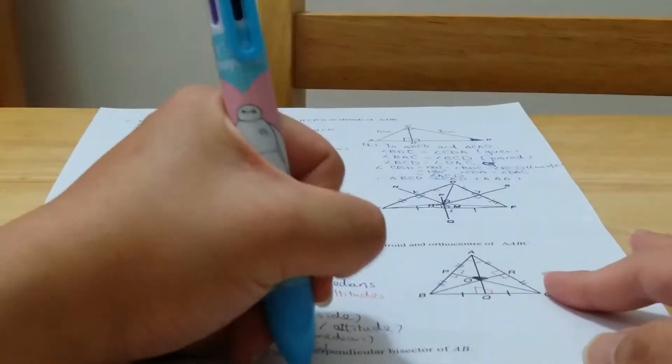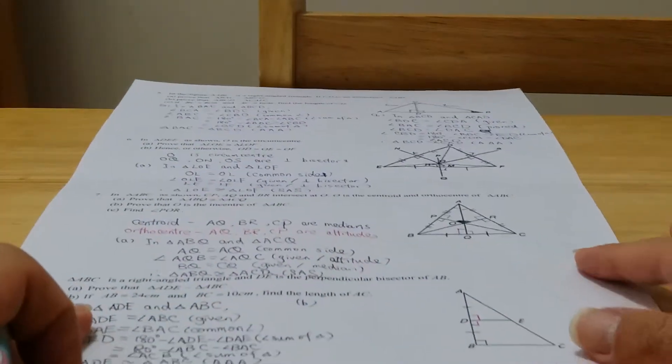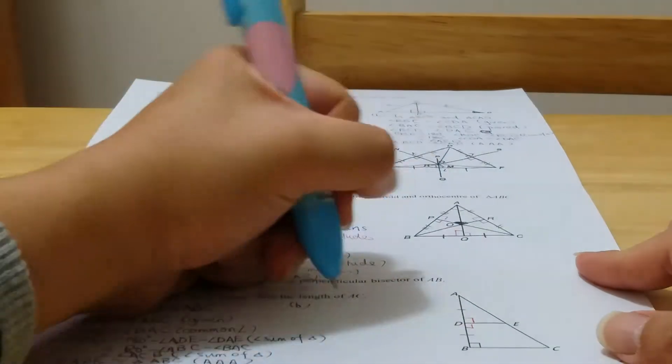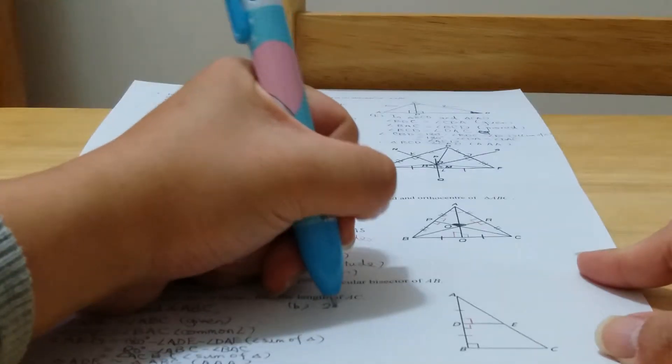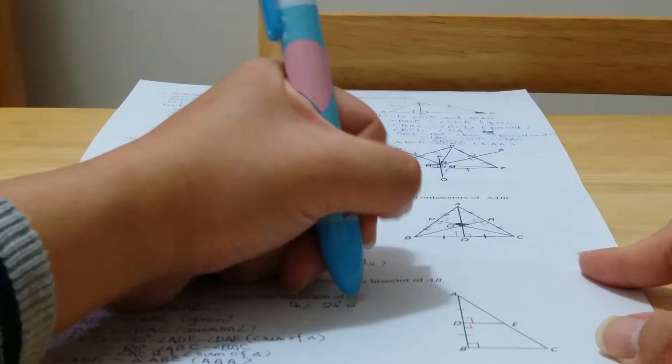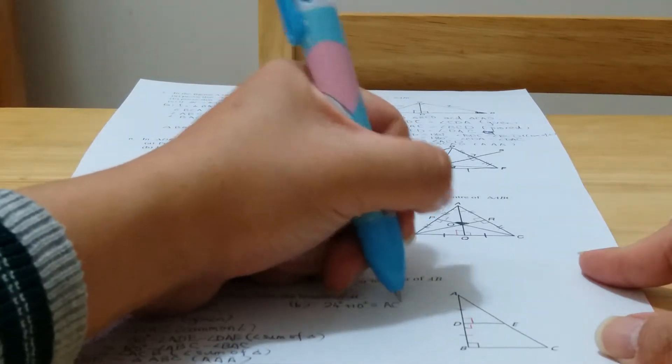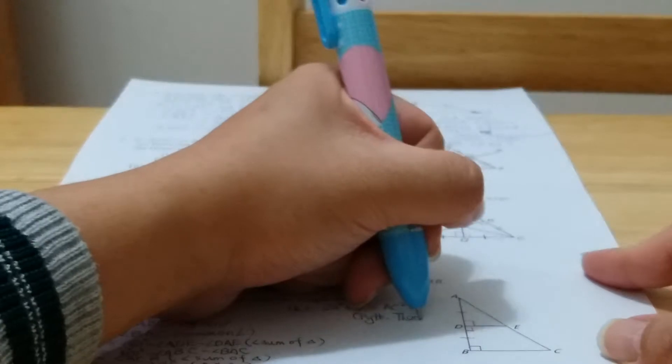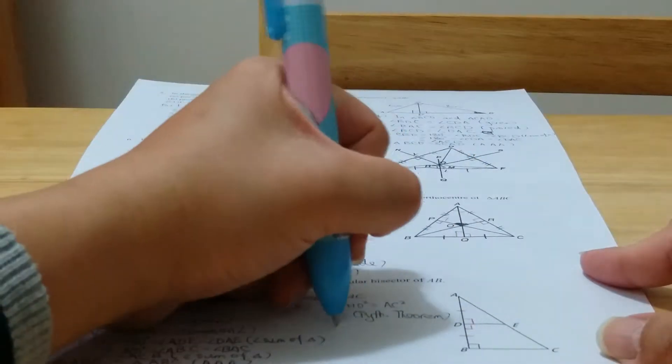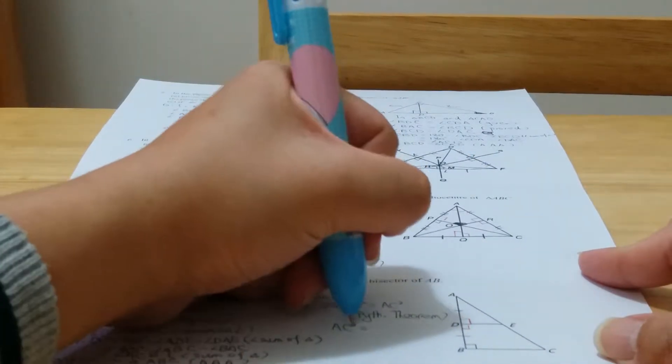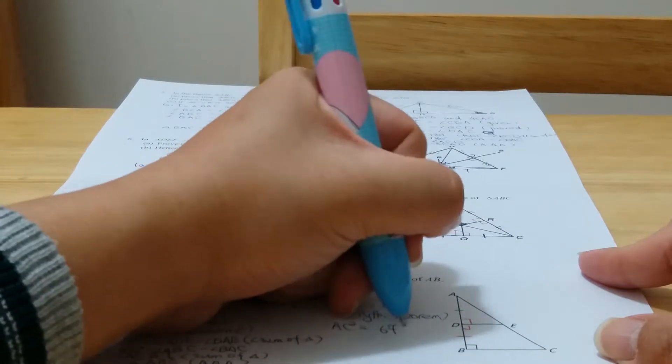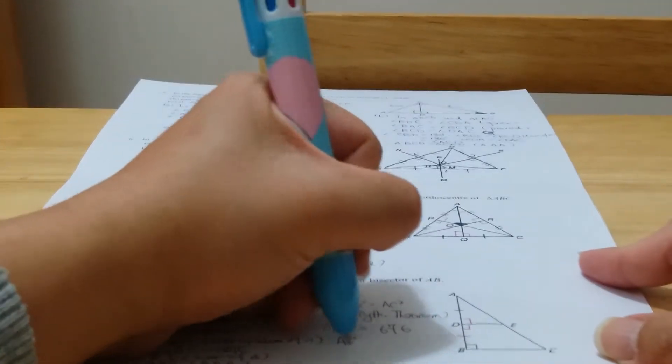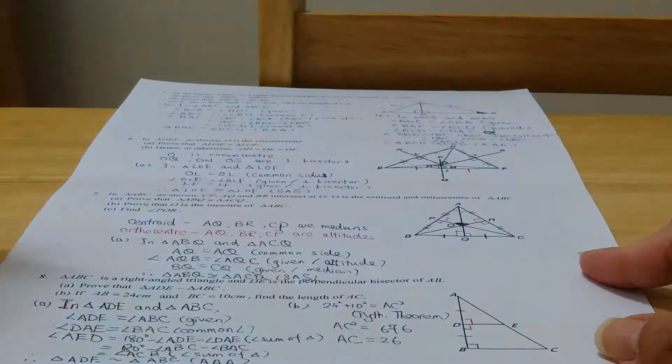So we have the Pythagorean theorem, that is 24 square plus 10 square equals AC square, that is Pythagorean theorem. So AC square will equal to 676,